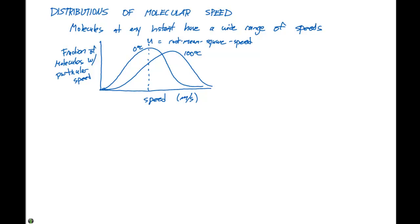So this is at 100 degrees Celsius. And you can see that the root mean square speed shifted over to the right, or it increased.